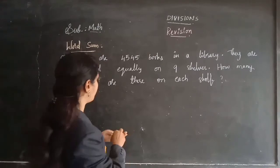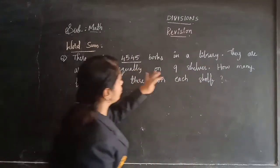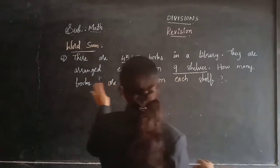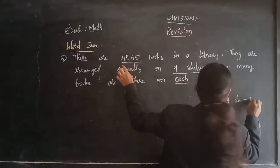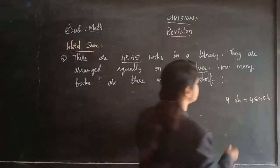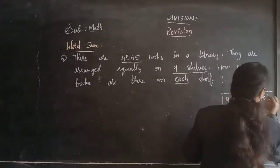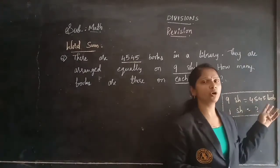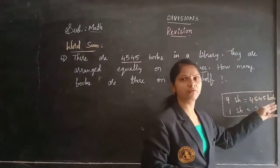Now let's do the word problem. There are 4,545 books in a library. They are arranged equally on 9 shelves. How many books are there on each shelf? We know the total and the number of shelves, and we are finding books on one shelf — so we need to divide. We need to divide 4,545 by 9.